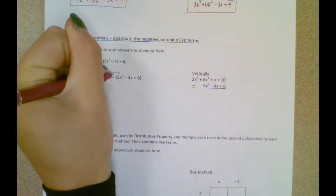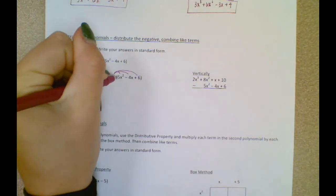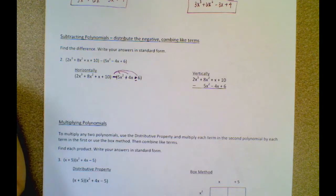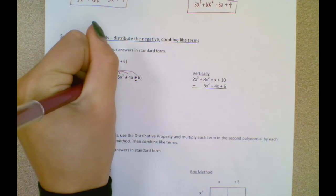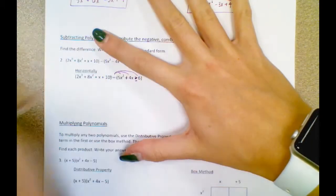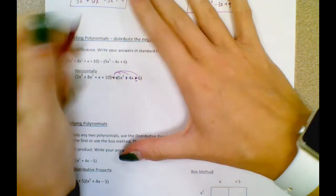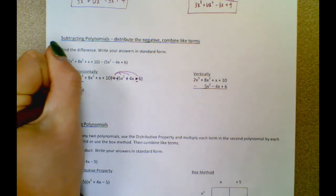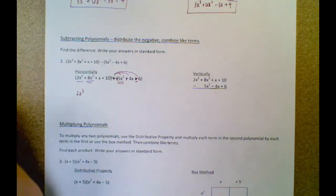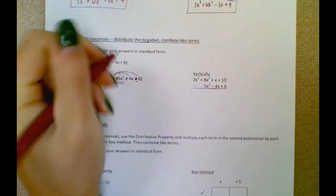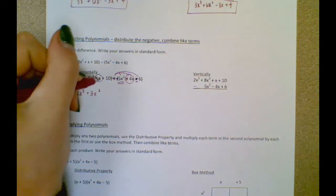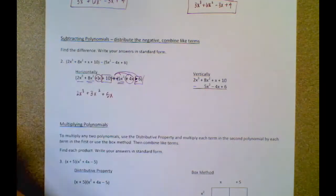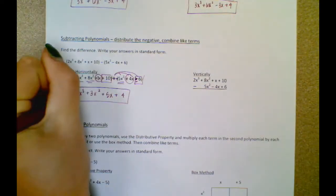I'm going to distribute this negative sign first. This becomes negative 5x squared, positive 4x, and negative 6. Now I'm going to combine my like terms, because this basically just turned into an addition problem. So now we just combine our like terms. Here's my only x to the third term. For x squareds: positive 8 minus 5 gives 3x squared. For x terms: x plus 4x — remember there's a 1 out in front of that x — so 1 plus 4 is 5. And then I've got 10 minus 6, which is positive 4.